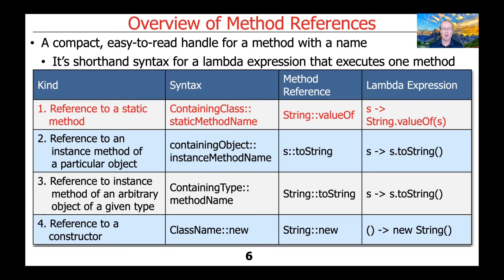The first type of method reference is a reference to a static method. This would be an example where we might have some class with a static method name in it. You can think of an example like the String class and its valueOf method, which can be used to create a string from various other data types. The corresponding Lambda expression for String::valueOf would be s, where s is an object, arrow, String.valueOf(s).